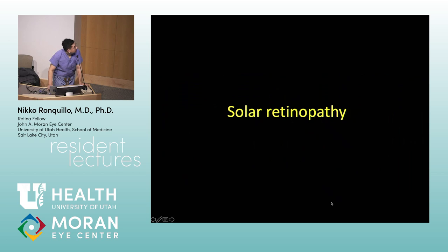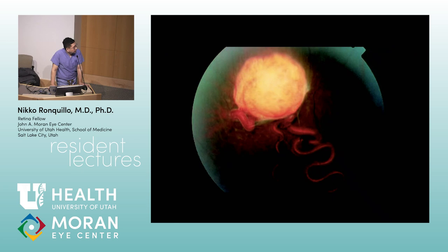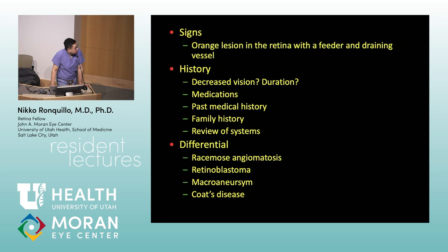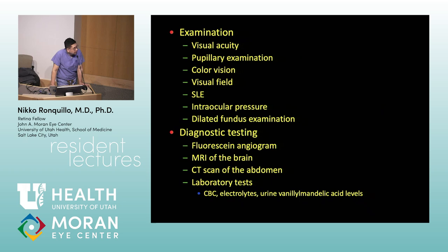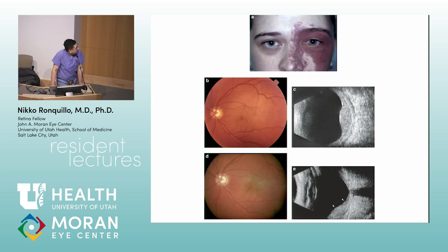Solar retinopathy — a picture was shown. Next — hemangioblastoma from Von Hippel-Lindau disease, chromosome 3. Associated with cysts in the GI tract, pancreas, kidneys, and epididymis, and hemangioblastomas in the brain.